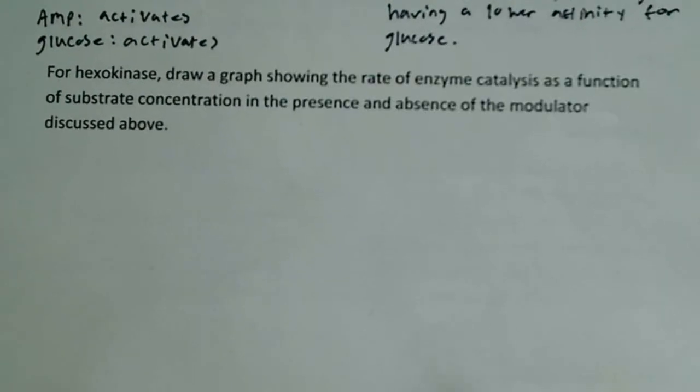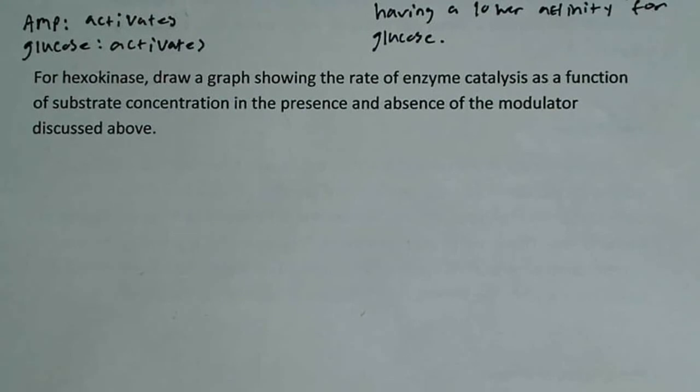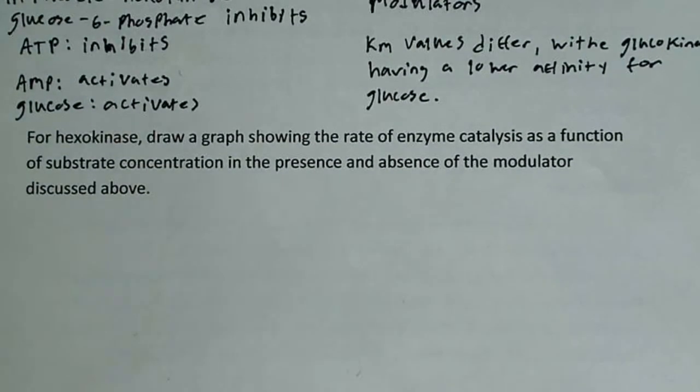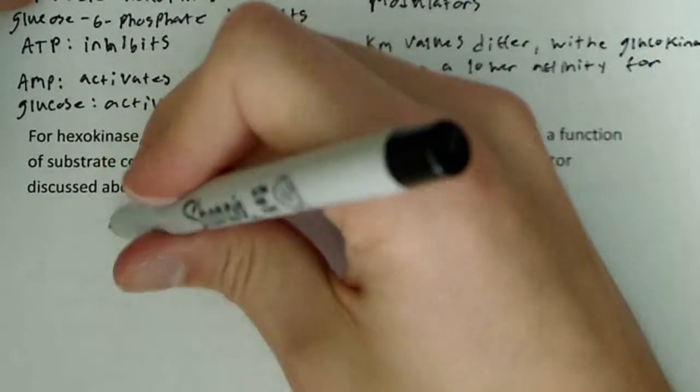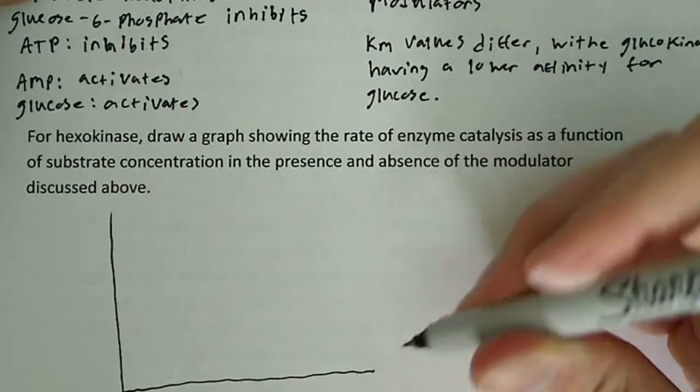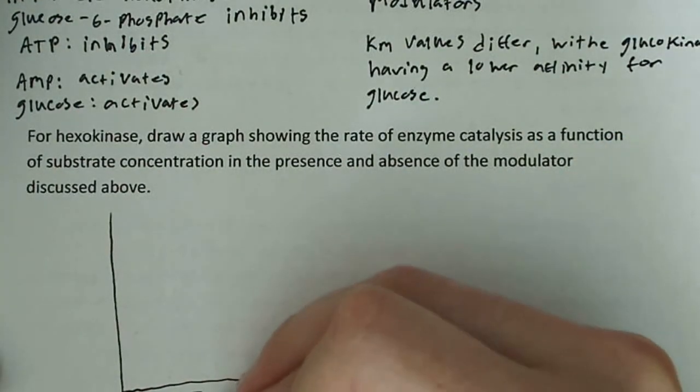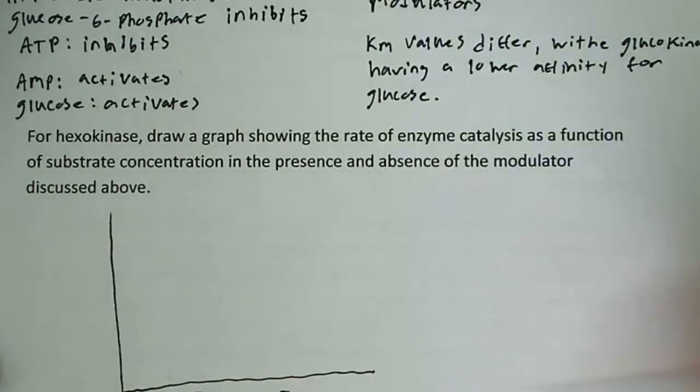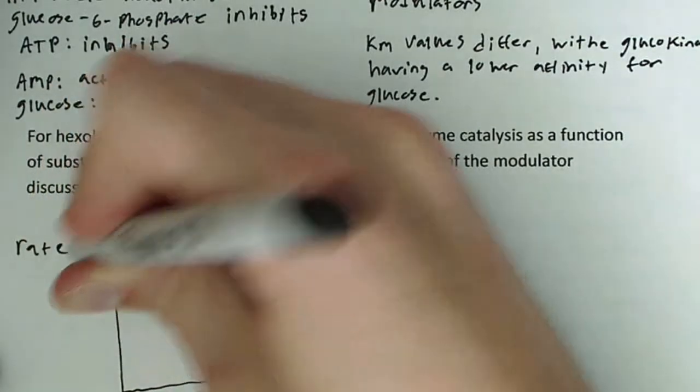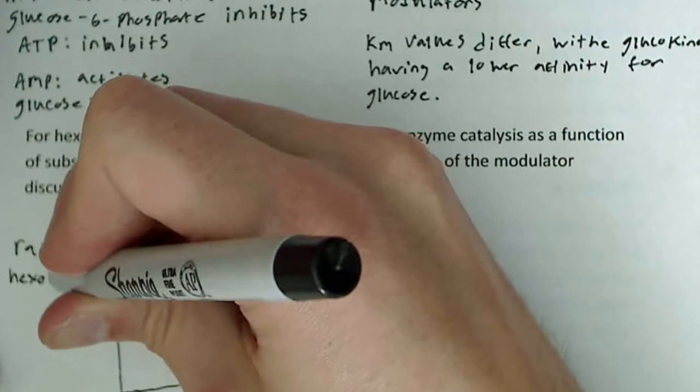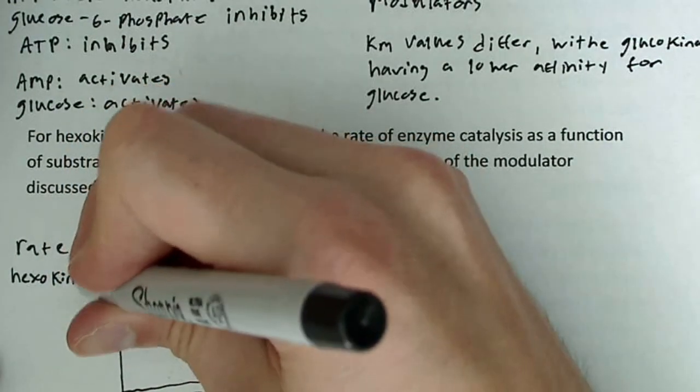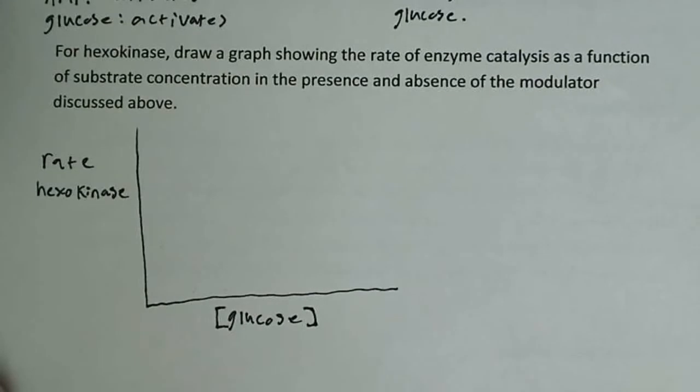Now, the rest of the question, there's another part to it, and it says for hexokinase, draw a graph showing the rate of enzyme catalysis as a function of substrate concentration in the presence and absence of a modulator discussed above. So I could pick any one, but the easiest one to do this with is if we use glucose 6-phosphate. Glucose 6-phosphate is probably the most important one to know and understand, but it's also the easiest one to draw the graph with. So they're saying this is the concentration of glucose. So this is the concentration of glucose, and over here is the rate of hexokinase. So those are my axes labeled, rate of hexokinase glucose over here.